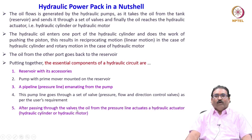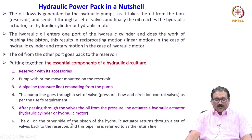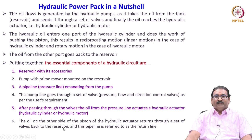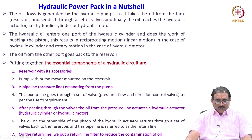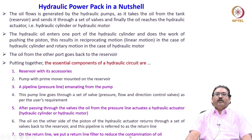After passing through the valve, the oil from the pressure line actuates the hydraulic actuator — either a cylinder or a motor. The oil on the other side of the piston of the hydraulic actuator returns through a set of valves back to the reservoir. This pipeline is referred to as a return line, R line, or a tank line, T line.